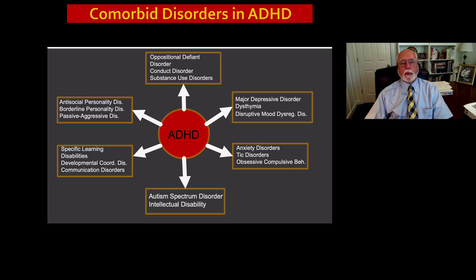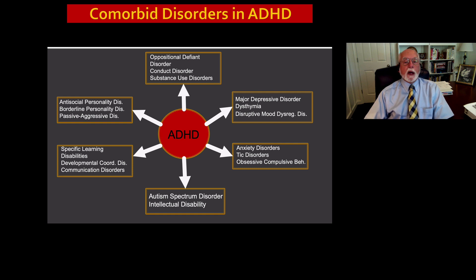and over 50% of them have at least two other disorders. What sorts of disorders are we talking about here? You see them on this graph. At the top are the impulse control disorders that have to do especially with control of impulse,